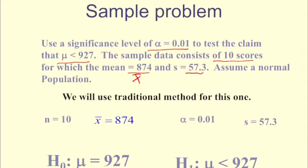So our null hypothesis always has an equal sign. Our null hypothesis is that there's no difference than a mean of 927. And our alternate hypothesis is that the mean is going to be less than 927.